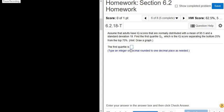Assume that adults have IQ scores that are normally distributed with the mean of 95.5. So that's our mean, mu is 95.5. And a standard deviation of 19, that's our sigma. So sigma is 19.